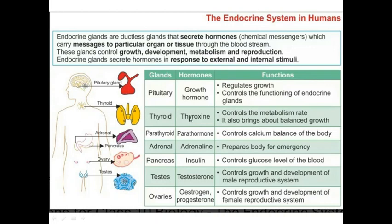Another endocrine gland is the thyroid, situated in the neck region. It secretes a hormone called thyroxine, which controls the metabolic rate and brings about balanced growth. Another hormone is adrenalin, secreted by the adrenal glands, which are situated on top of the kidneys.